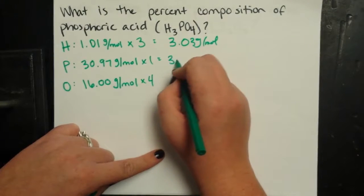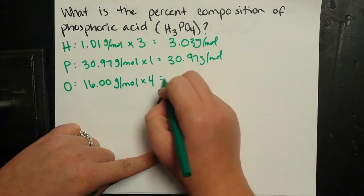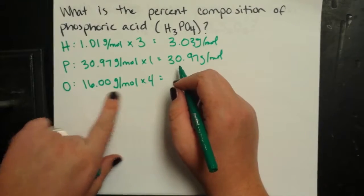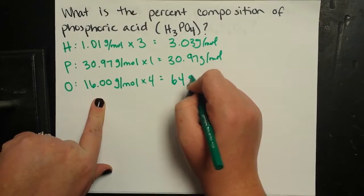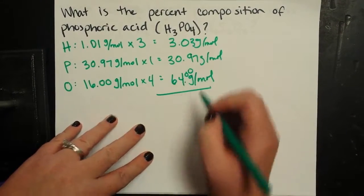So phosphorus is still going to contribute only 30.97 grams for every mole. And oxygen now is going to be 64 grams for every mole of phosphoric acid.